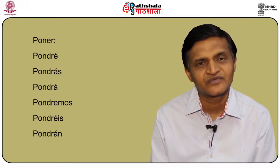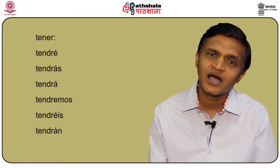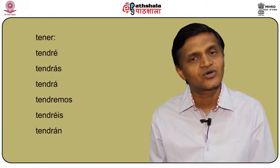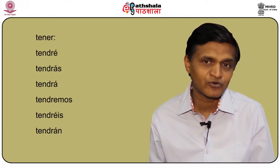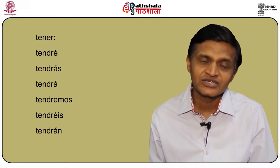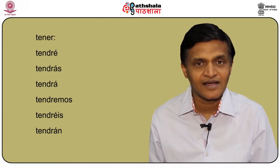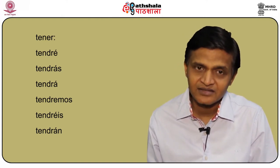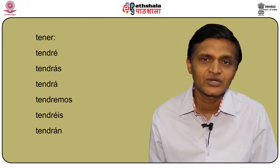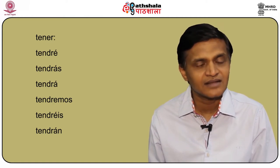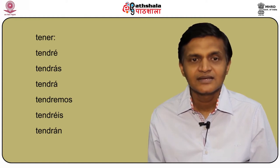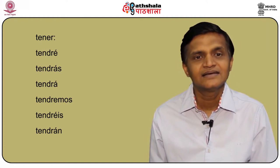What happens with a verb like tener? Again, drop the e or i of the infinitive and add the consonant D — like poner becomes pondré, tener becomes tendré. The conjugation of tener: yo tendré, tú tendrás, él/ella/usted tendrá, nosotros tendremos, vosotros tendréis, and ellos/ellas/ustedes tendrán.